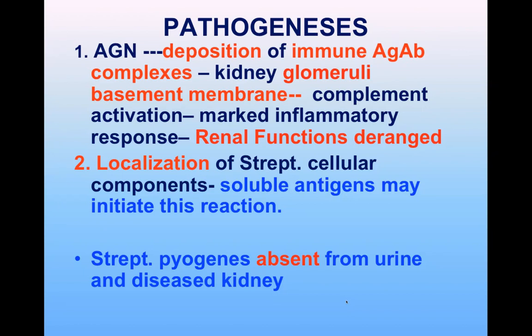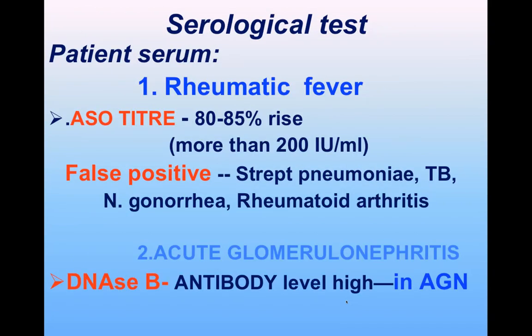The pathogenesis involves antigen-antibody complex deposition in the kidney glomerular basement membrane, activating complement and causing marked inflammation with deranged renal function. A second school of thought suggests direct localization of streptococcal cellular components on the glomerular membrane. Importantly, Strep pyogenes is absent from the urine and diseased kidney.